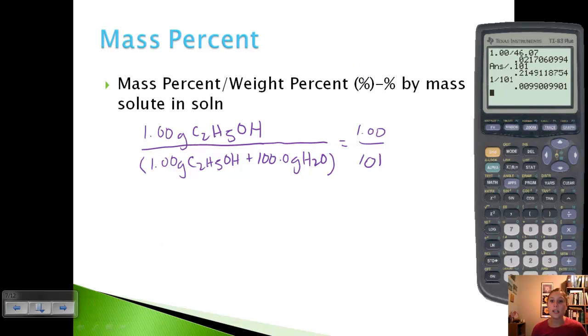Because it's a percent, we multiply by 100, which gives us 0.990% ethanol. Not a whole lot of ethanol within the overall solution. Mass percent is mass of your solute divided by your total.